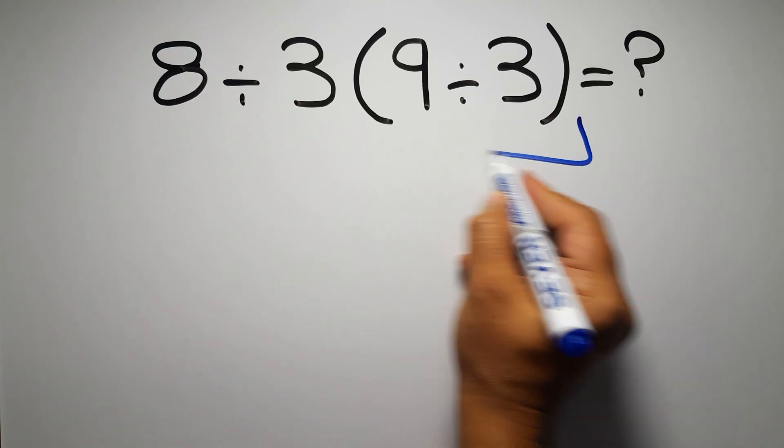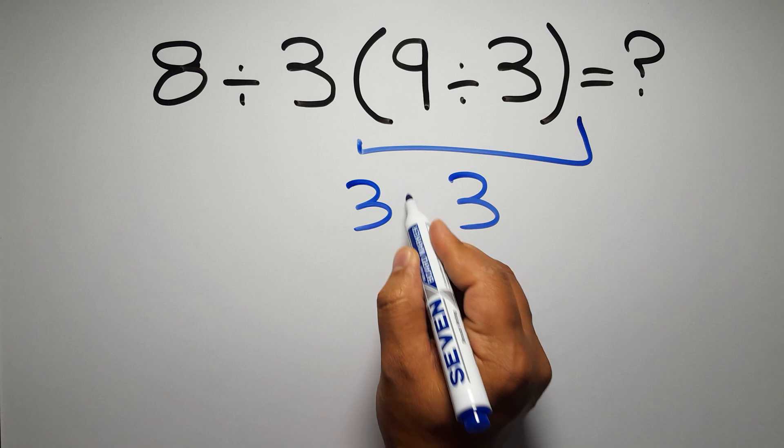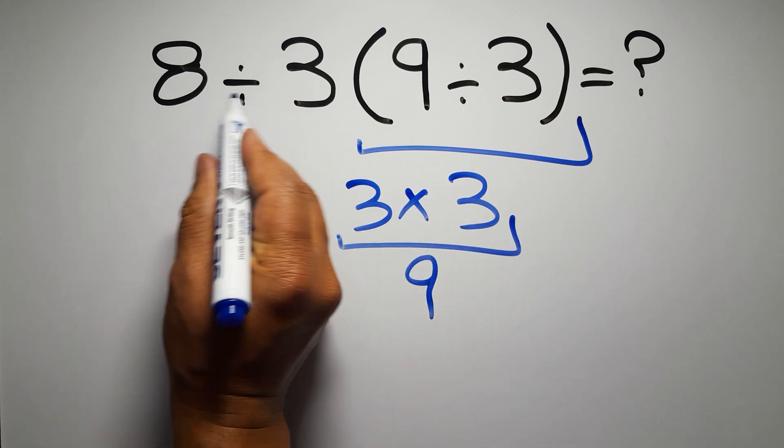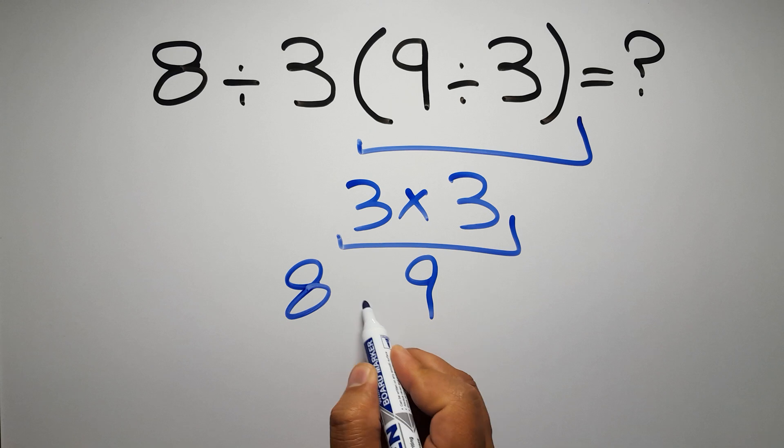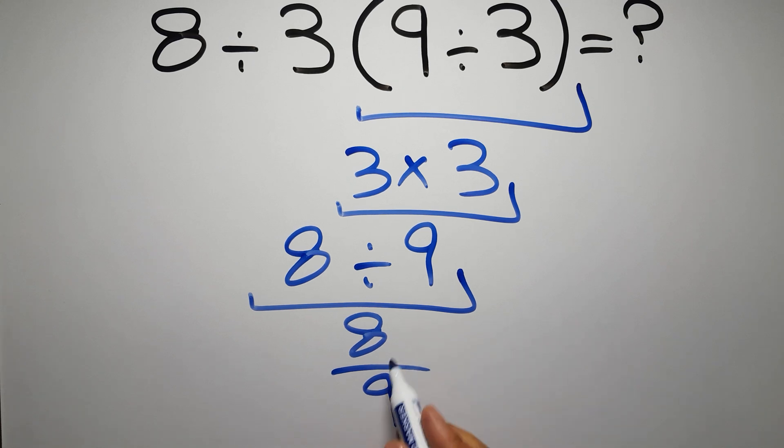9 divided by 3 gives us 3, and 3 times 3 equals 9, so 8 divided by 9 equals 8 over 9, but this answer is not correct.